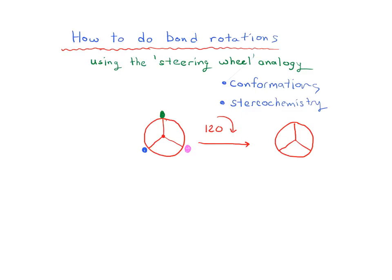The tassels, however, give away the fact that your steering wheel has rotated. Your green tassel is going to rotate 120 degrees clockwise, your purple or pink tassel is going to rotate 120 degrees clockwise, and your blue is going to rotate 120 degrees clockwise. This is what it's going to look like after you've done this rotation.